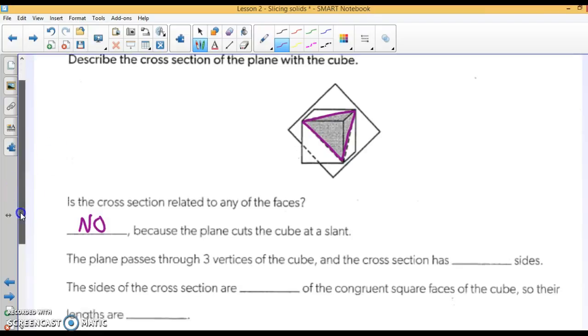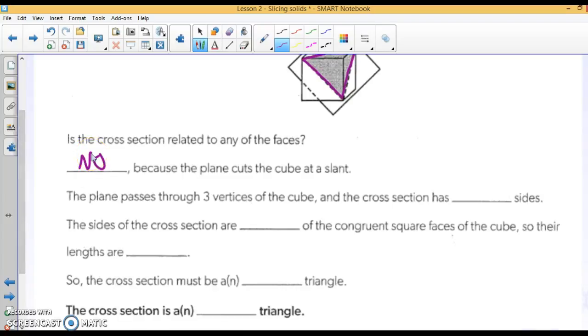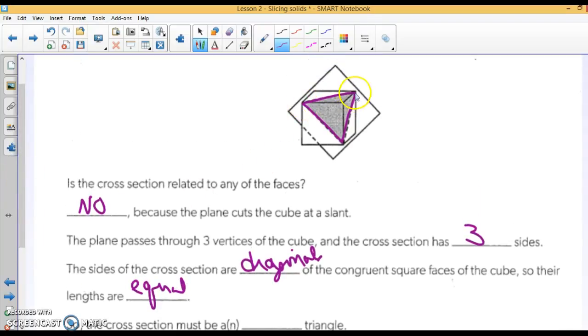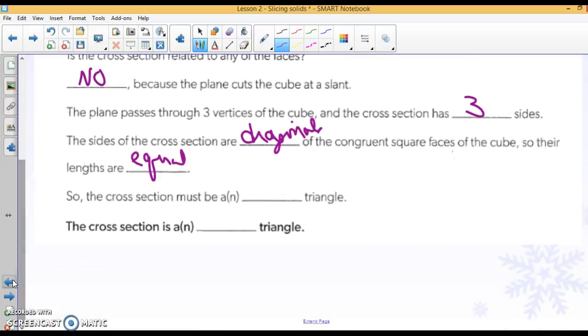The plane passes through three vertices of the cube, and the cross-section has three sides. The sides of the cross-section are diagonals of the congruent square faces of the cube. So their lengths are equal. Because look where this goes. It goes from here to here, it's a diagonal. There to a diagonal. There to a diagonal. So the slice is an equilateral triangle.